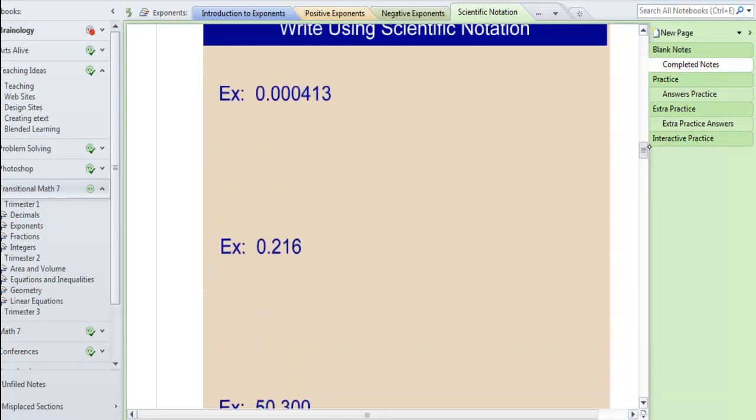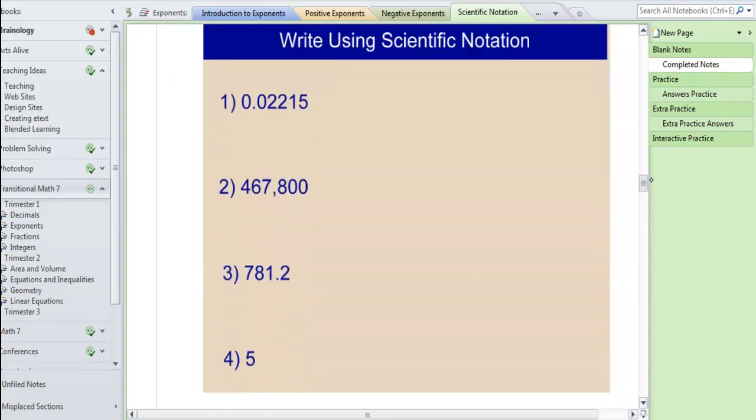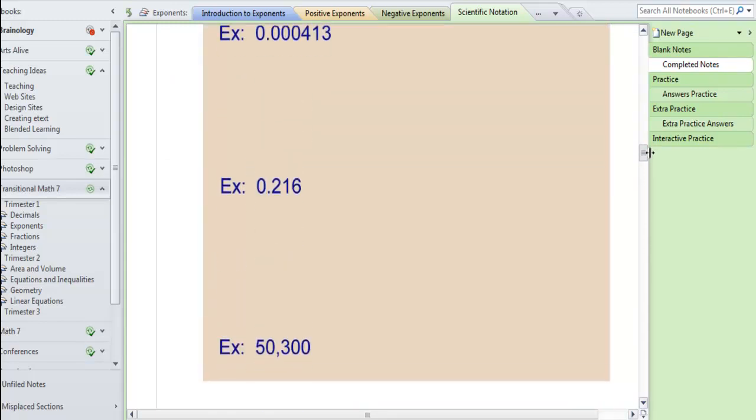So now I'd like you to try the next three problems and pause the video and come back to it. You should have 4.13 times 10 to the negative fourth for the first one, 2.16 times 10 to the negative first for the second one, and 5.03 times 10 to the fourth for the third one.